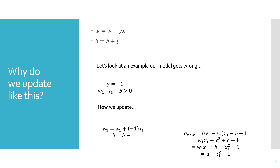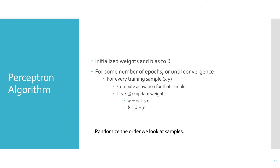Back to the algorithm: we want to remember to randomize the order in which we look at samples. If we don't, we could end up looking at all the positive samples first and skewing our algorithm. It will eventually get to the right answer, but without randomization it will take longer. Once the algorithm converges, we return the weights and bias.